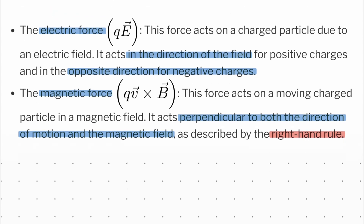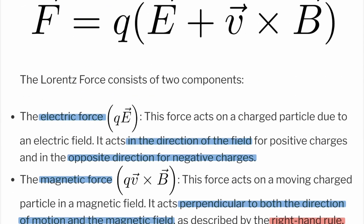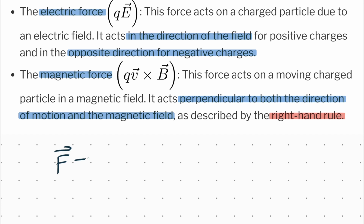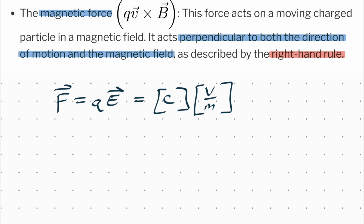Let's start by proving the units. For the electric force, F equals qE. The units of q are coulombs and the units of E are volts per meter. That doesn't look like newtons yet, but it will be. A coulomb is amps times seconds.